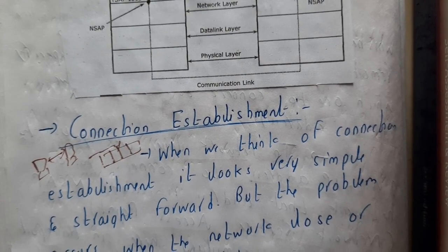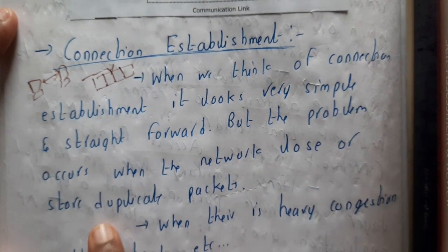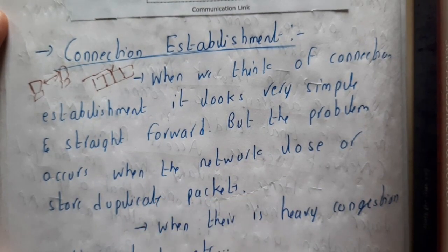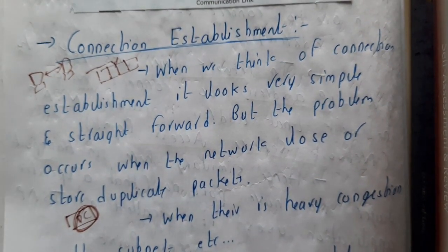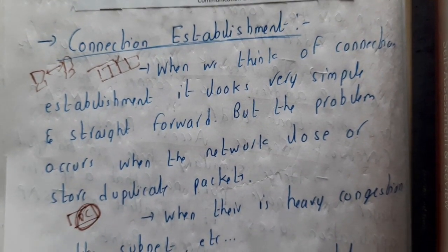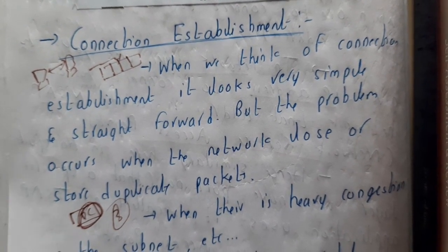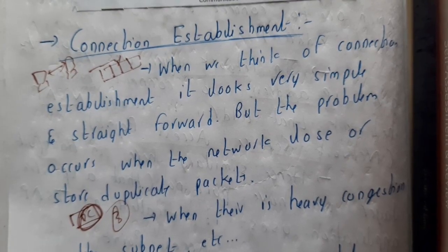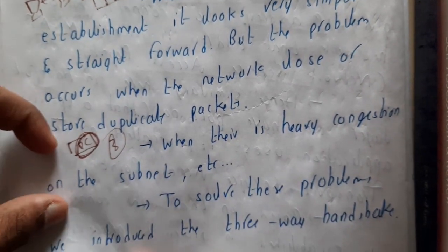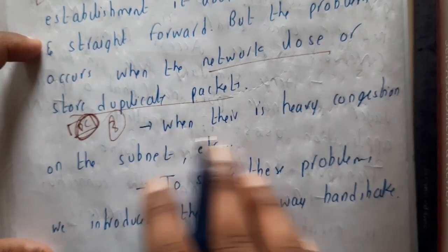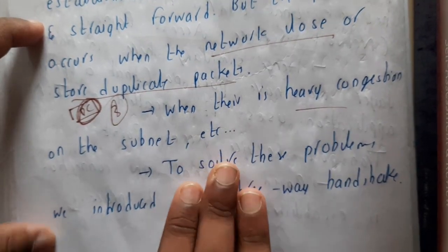There could be multiple issues: network loss, duplicate packets, or heavy congestion on the subnet. To solve these kinds of problems, we use a process called the three-way handshake. In the three-way handshake, initially you send a request, you receive the acknowledgement, and then you transmit the data. Those are the three steps.